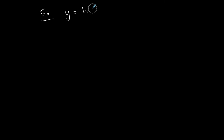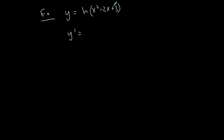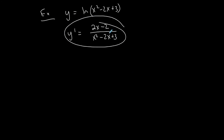If the log is the natural log — for example, ln of x squared minus 2x plus 3 — then the derivative becomes just u prime over u. So the derivative of this function is 2x minus 2, divided by itself, x squared minus 2x plus 3. If I can factor and things will cancel, then I will, but in this case nothing's going to cancel, so we're done.